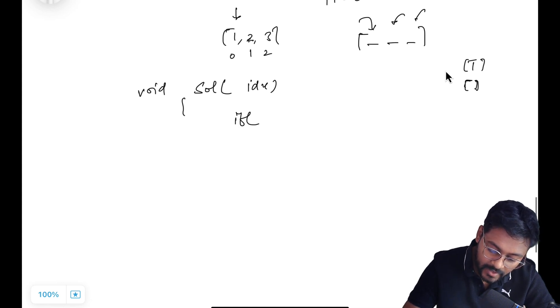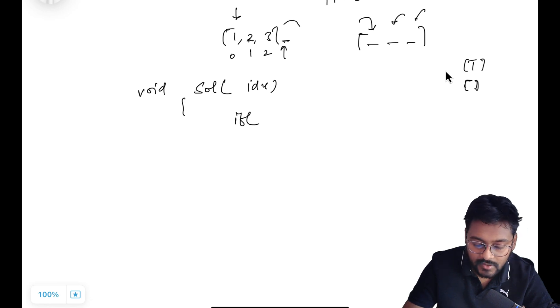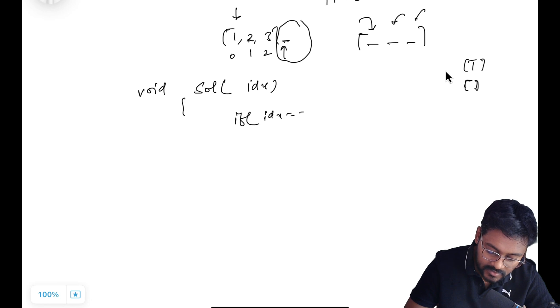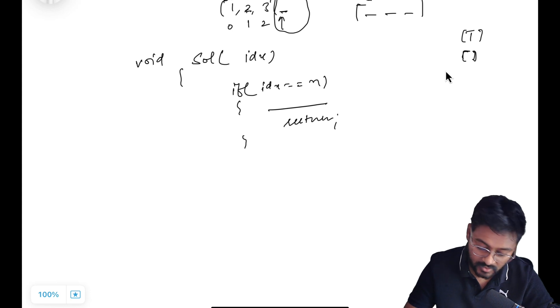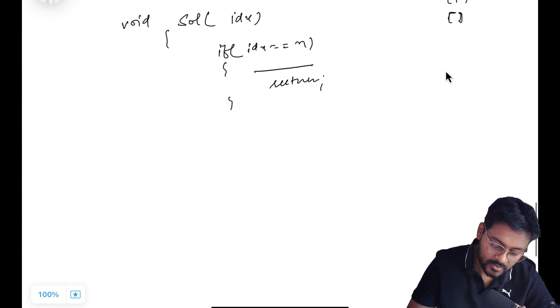So what will be my terminating case? If I am at this position, my index is this, because there are no elements. No elements means no value to print. If idx is equal to n, in that case nothing. Just print or return. Just do your stuff and return.